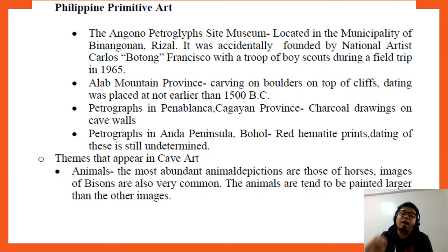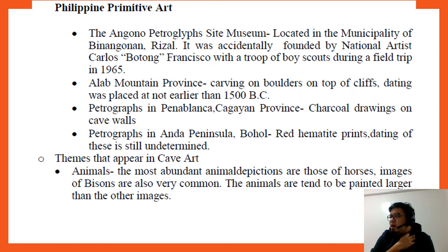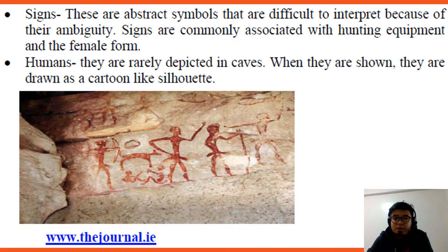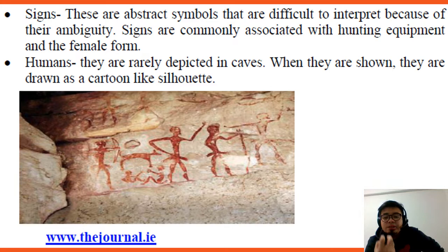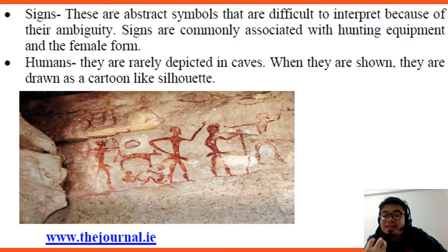What are the themes that may appear in caves? First, animals. People lived in caves to protect themselves from harm. Second, signs — these are abstract symbols that are difficult to interpret because of their ambiguity. Signs are commonly associated with hunting equipment and the female form.